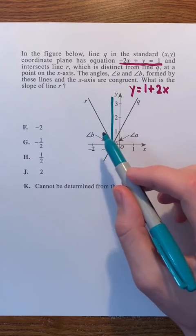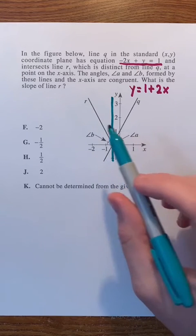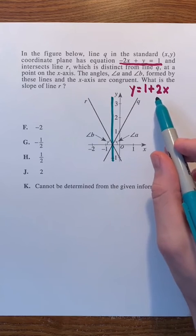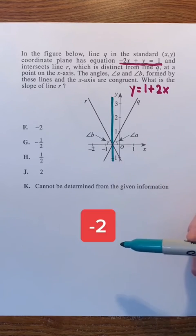Therefore, since lines r and q have slopes of the same magnitude, and line r has a negative slope, line r has a slope of negative 2, which is F.